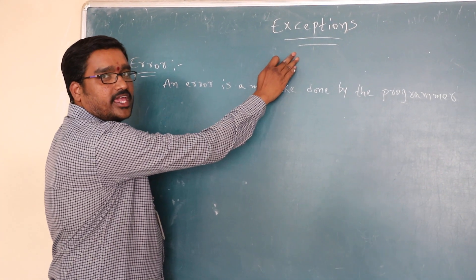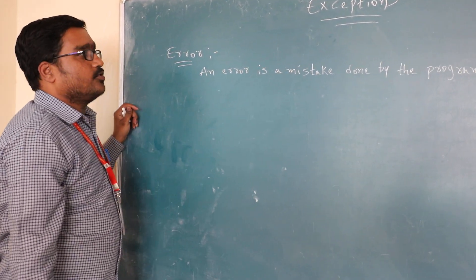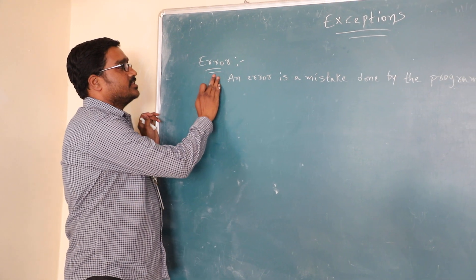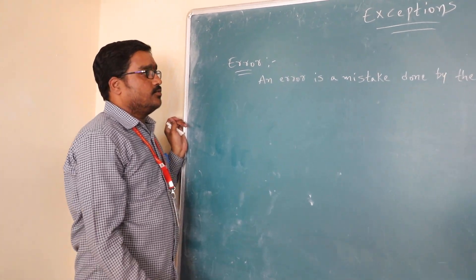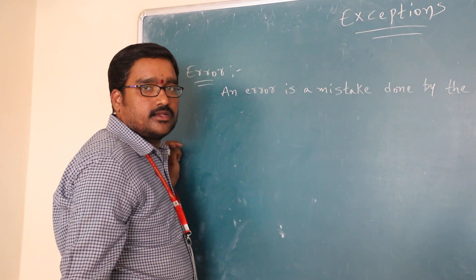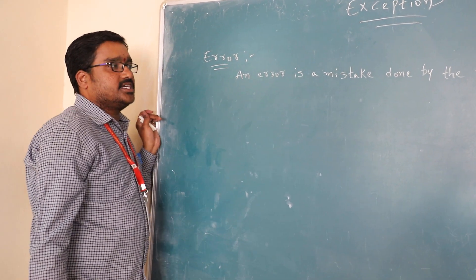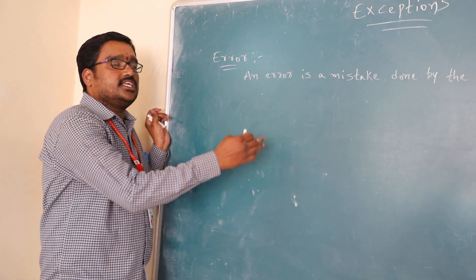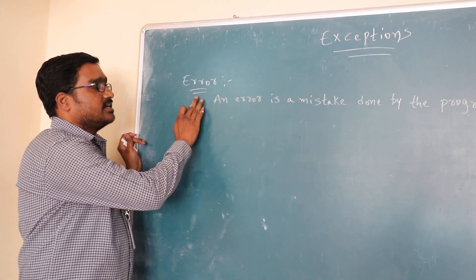We are about to discuss the concept of exception. Before going to the exception topic, we will discuss the concept of error. What is an error? An error is a mistake made by the programmer. Either the programmer may make the mistake intentionally or unintentionally. That mistake will come under the errors.